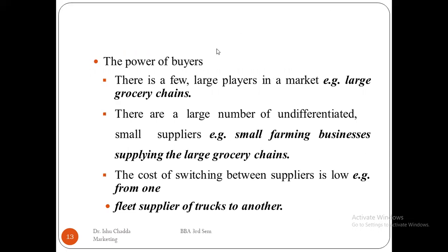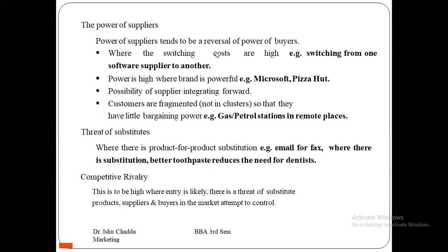The power of buyers is significant when there are few large buyer players in the market, such as large grocery chains, there are a large number of undifferentiated small suppliers such as small farming businesses supplying larger grocery stores, and the cost of switching between suppliers is low, for example from one fleet supplier of trucks to another. The power of suppliers tends to be the reverse of the power of buyers — where switching costs are high (such as switching from one software supplier to another), the supplier's brand is powerful like Microsoft, or there is a possibility of the supplier integrating forward.